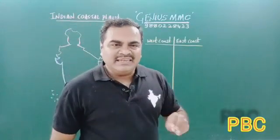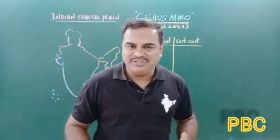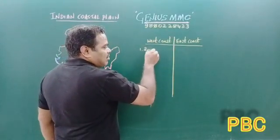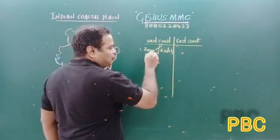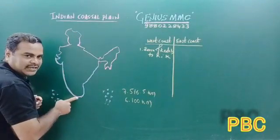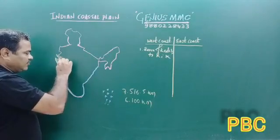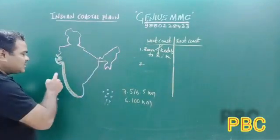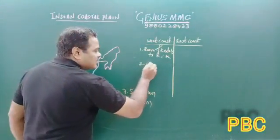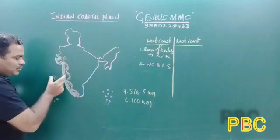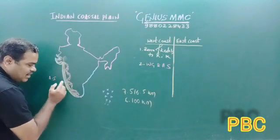Based on direction, the Indian coastal plain is classified into two divisions: the West coastal plain and the East coastal plain. The West coastal plain extends from Rann of Kutch to Kanyakumari, and it lies between the Western Ghats and the Arabian Sea.